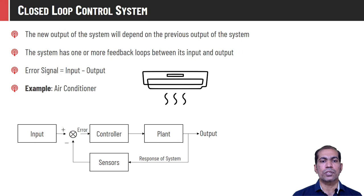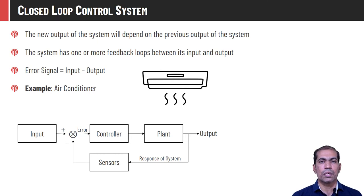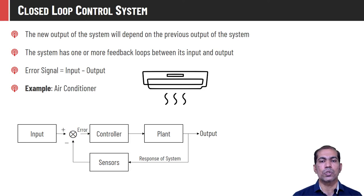In a closed loop control system, the new output of the physical system depends on the previous output. Depending upon what the output was last time, new parameters will be tuned, some new rules will be fired, and the controller will take new actions. An air conditioner is an example of a closed loop control system.